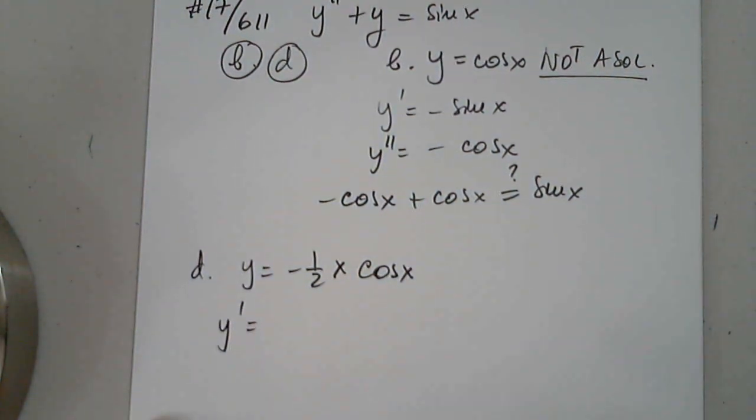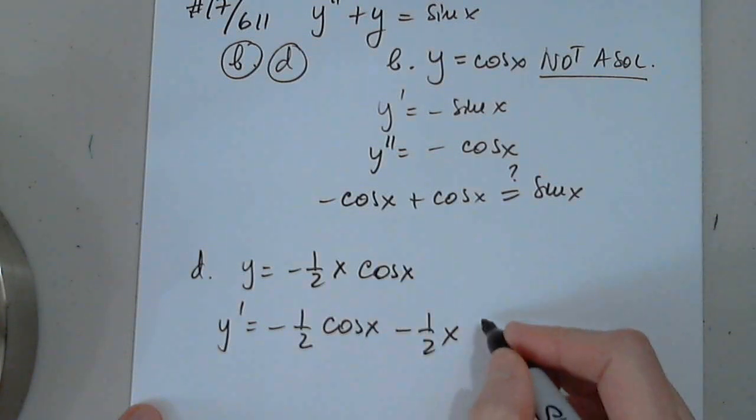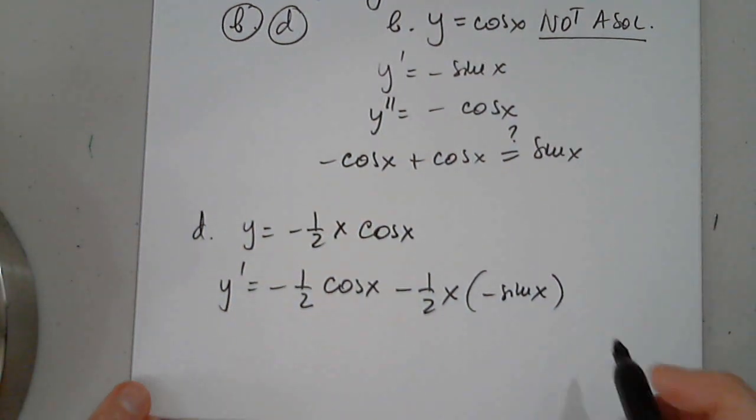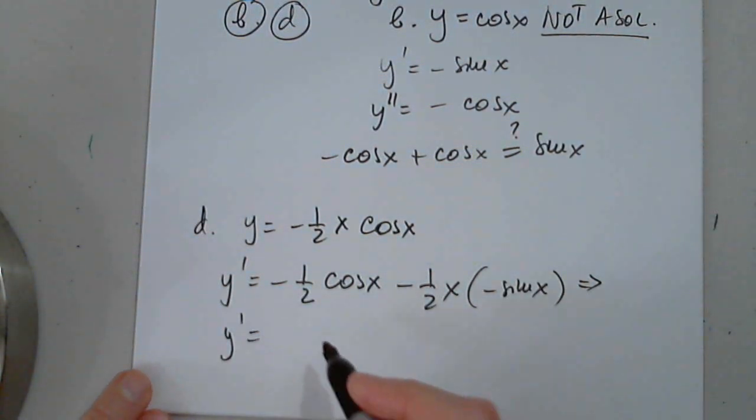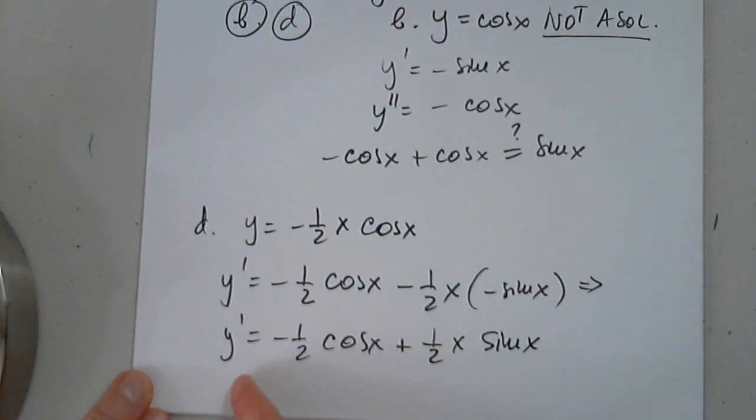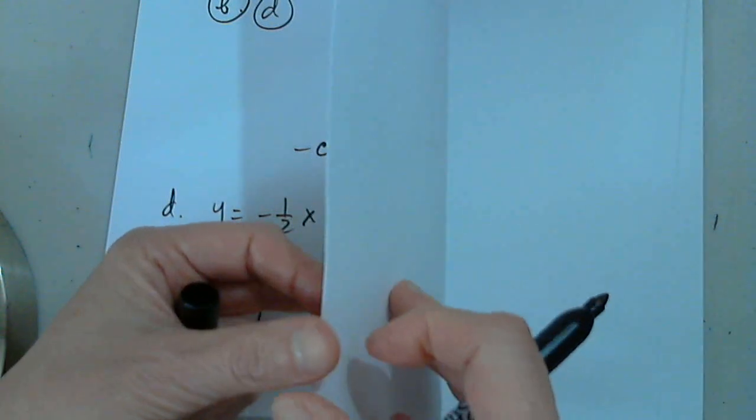So we start with the first derivative. Careful, this is the product rule. So negative one half, the first function prime is one, times cosine x. And then minus one half x multiplied by the second function prime, which is negative sine x. I tried to simplify a little bit and just remove parentheses. So from here I have that y prime, negative one half cosine x and plus one half x sine x. This is just the first derivative. We need the second derivative.